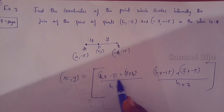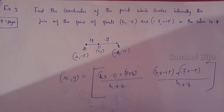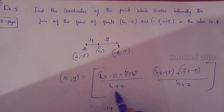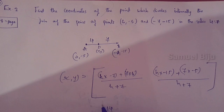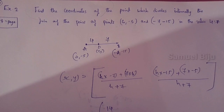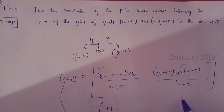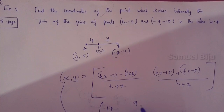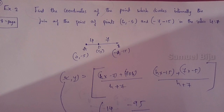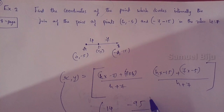Adding: minus 28 plus 42 equals 14, so x equals 14 divided by 11. Now for y, the value is 95 divided by 11.